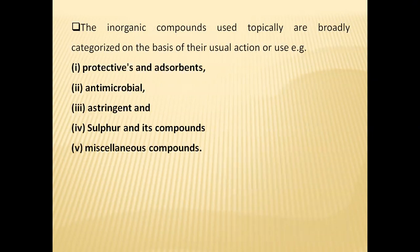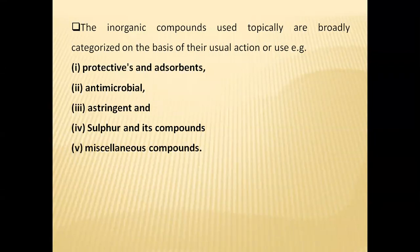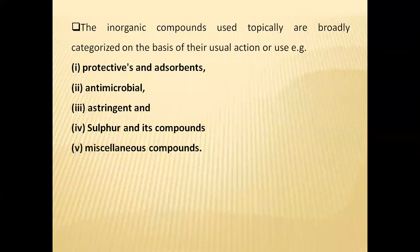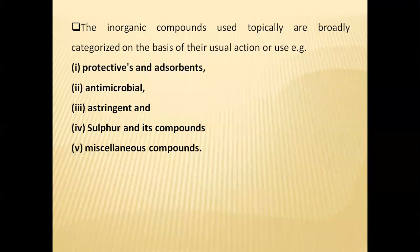In your exam, they may ask you to define topical agents and give their classification. Topical agents are classified according to their uses and actions into five types: (1) Protective and adsorbents, (2) Antimicrobial, (3) Astringent, (4) Sulfur and its compounds, and (5) Miscellaneous compounds. Astringents come under the topical agents category.